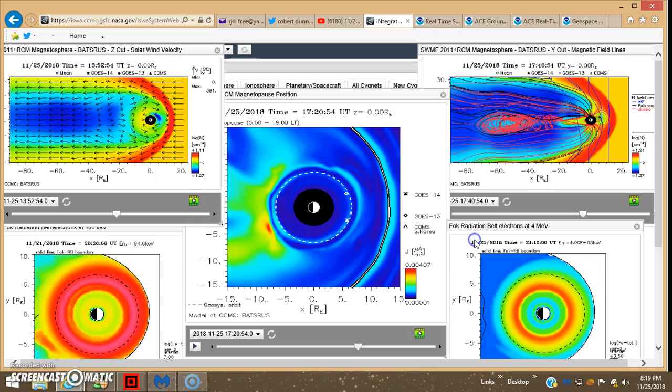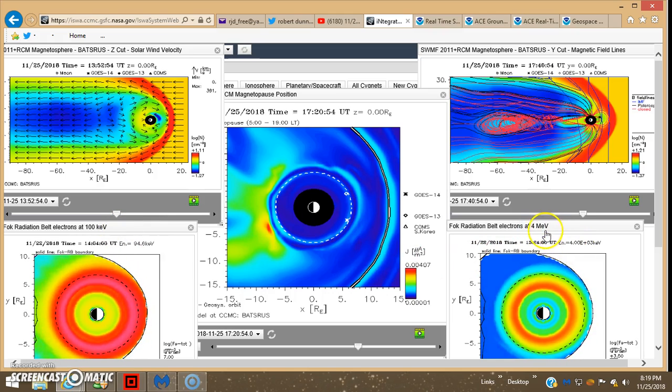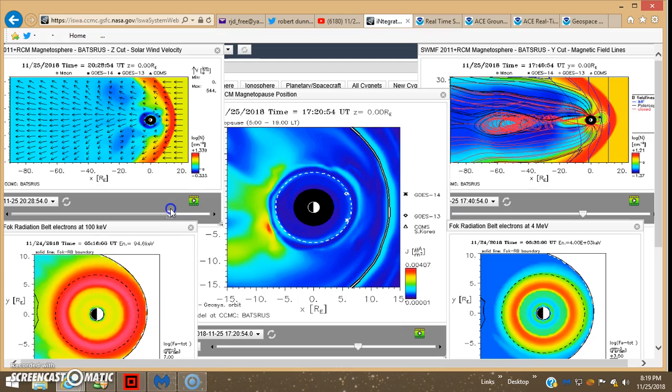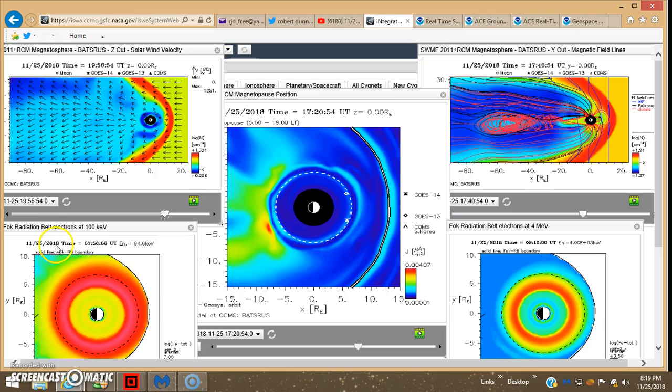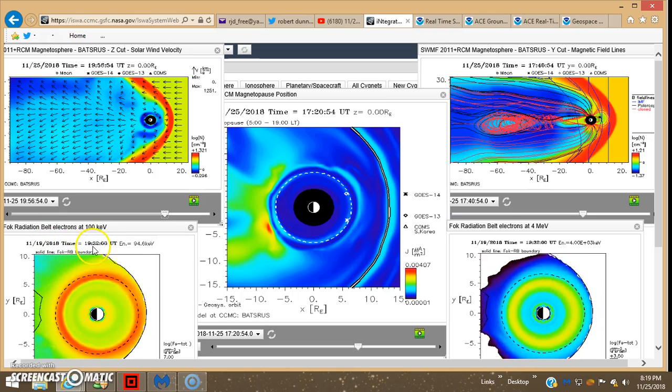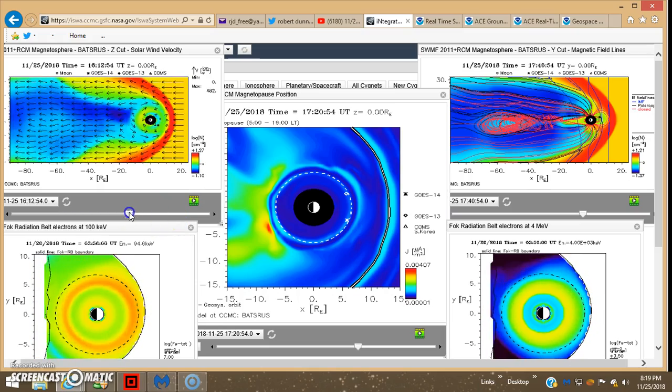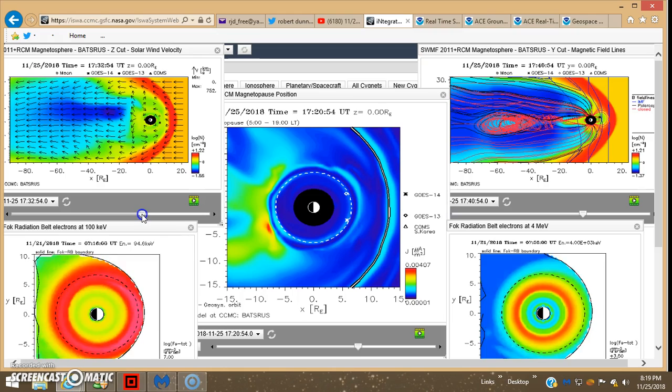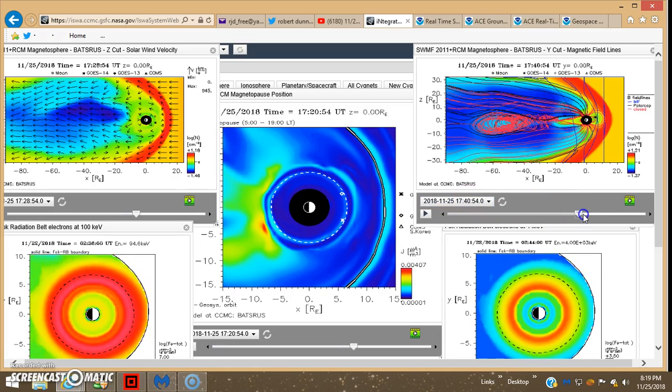This is all being recorded inside our magnetopause around the earth. These are the latest runs on the Van Allen radiation belts at 100,000 electron volts and 4 million electron volts. They don't quite go as deep as this run goes. They stop around 1600 or 1700 UTC. So we're not seeing the rest of this stuff when the solar wind speeds went wackadoodle on us starting at 1720.